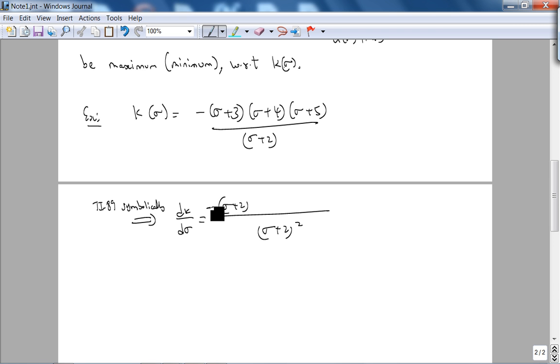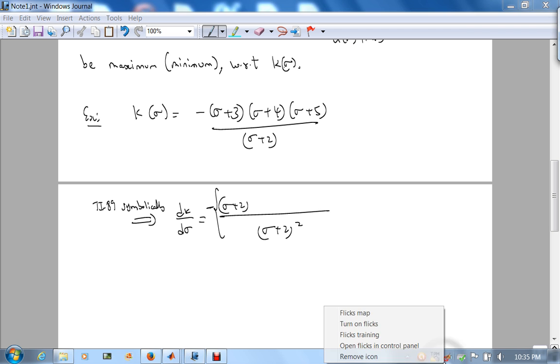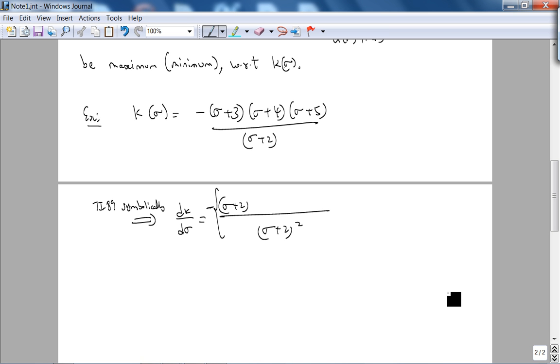It's the denominator squared times derivative of the numerator. Let me use the expand functionality on my calculator which I just did before this lecture commenced. What I got was denominator squared times denominator times derivative of the numerator. So the derivative of the expanded term I got, which is σ² + 24σ + 47, minus numerator times derivative of the denominator. The derivative of the denominator is 1. The numerator is this expanded term I got, which is σ³ + 12σ² + 47σ + 60.